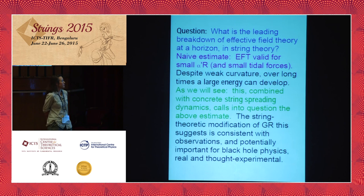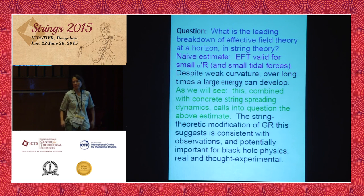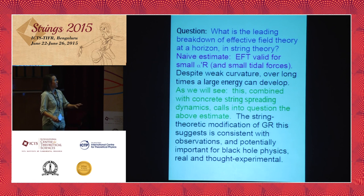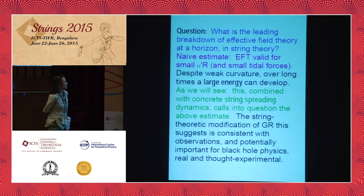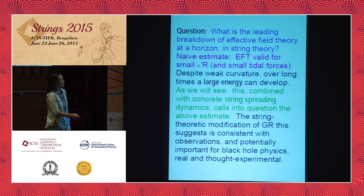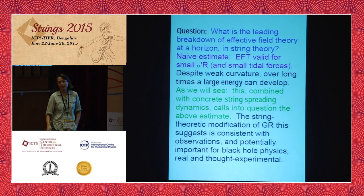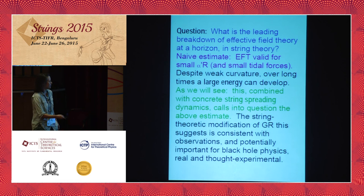However, this is subtle. It's known to be subtle because, despite the weak curvature of a large-radius Schwarzschild black hole, over a long time evolution involving trajectories falling into the black hole horizon, even though the curvature is weak, the trajectories can develop a large energy — in a sense I'll make clear on the next slide. And that makes for a subtle question, especially in string theory, because of this string spreading effect that I'm going to review. This suggests a string-theoretic modification of GR that's interesting to pursue.